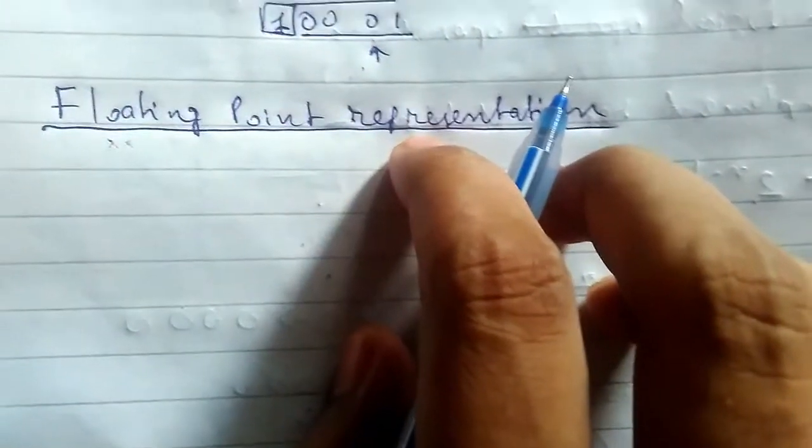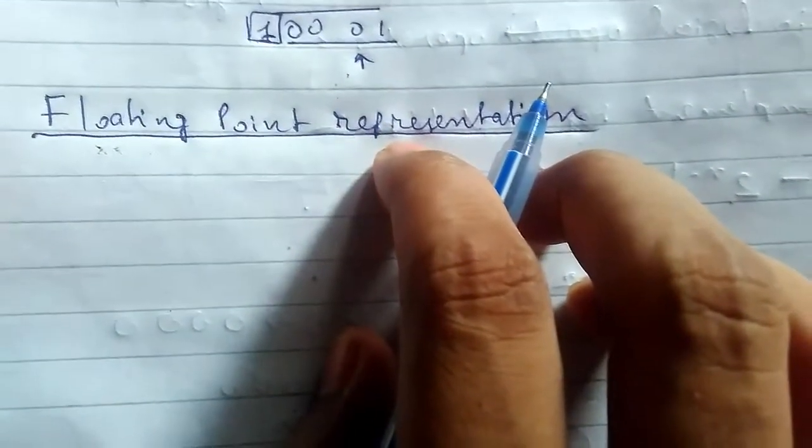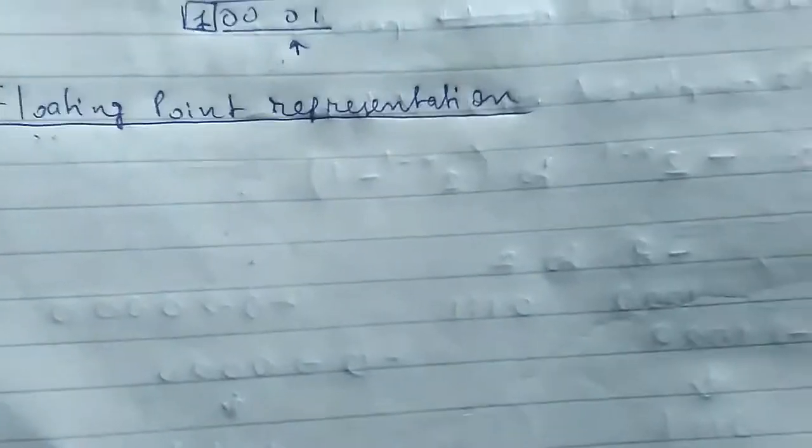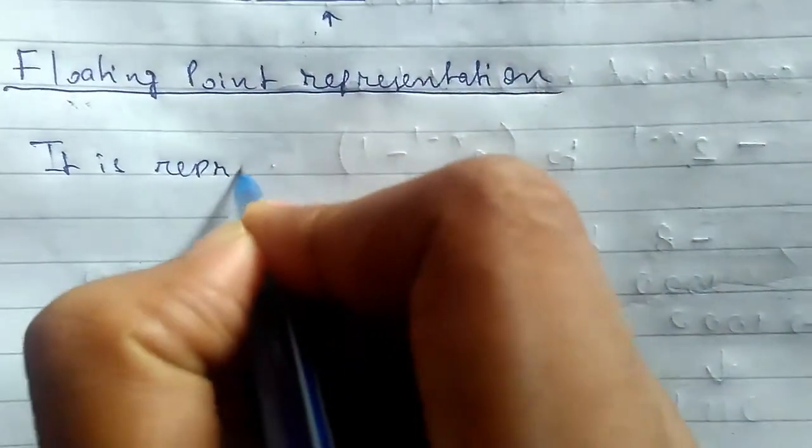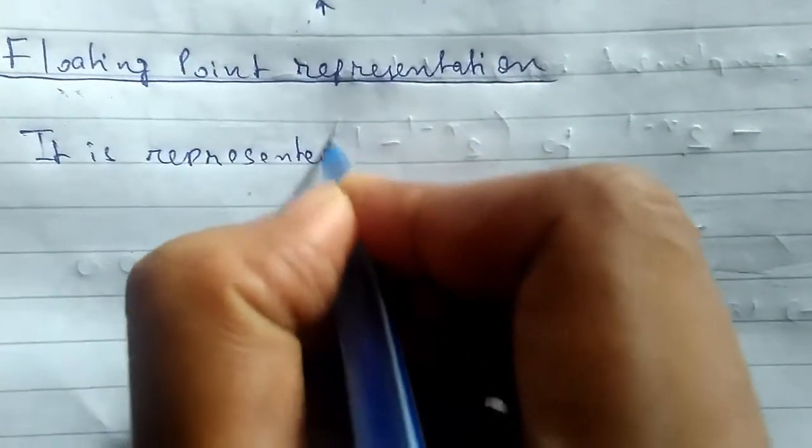Welcome back guys, so today we will be continuing data representation and computer arithmetic. Today we will be studying about floating point representation. It is represented by two parts, mainly mantissa and exponent.